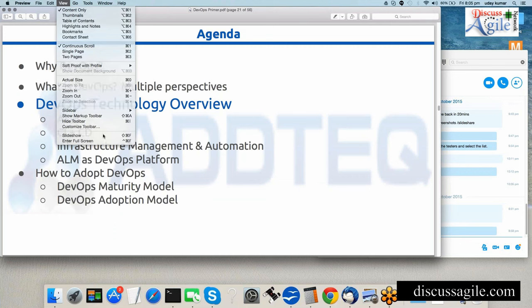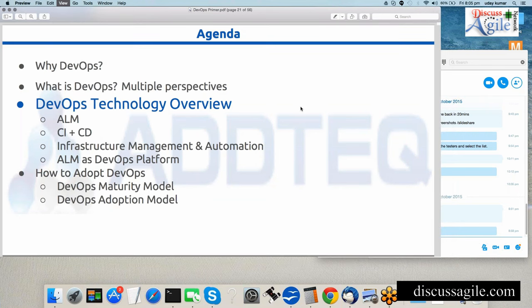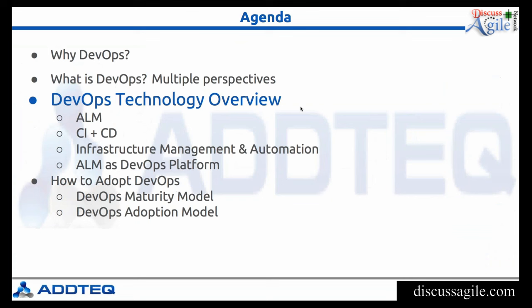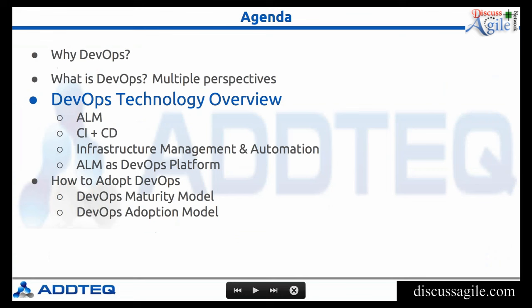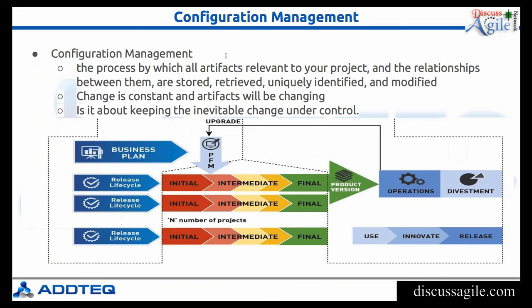Now I'll cover DevOps technology as we think about it at Ad Tech. There are many people talking about DevOps technology from their own perspective. Starting with configuration management: when you do projects or releases, configuration management is about capturing artifacts so you can replicate in the event of an unexpected event like a system crash — identifying, storing, and uniquely identifying those artifacts.